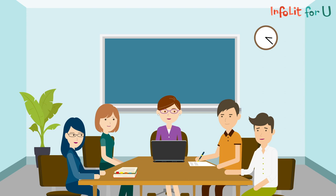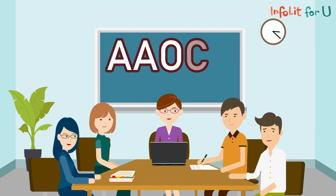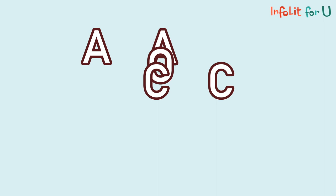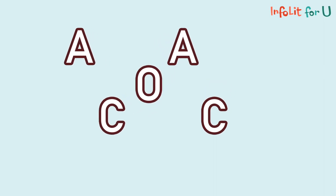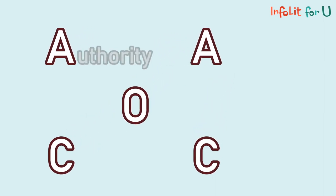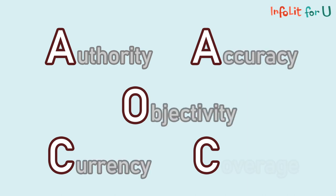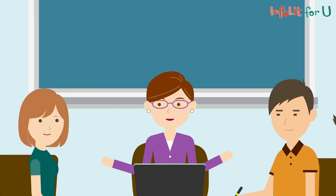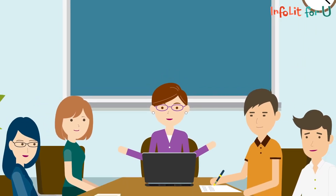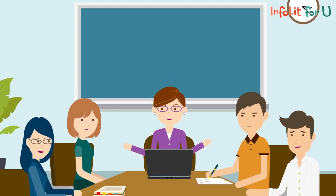Sure. Do you remember what is AAOCC? AAOCC are five criteria for evaluating information. They are authority, accuracy, objectivity, currency, and coverage. And also, you have to ask a few more questions to evaluate the primary and secondary sources.